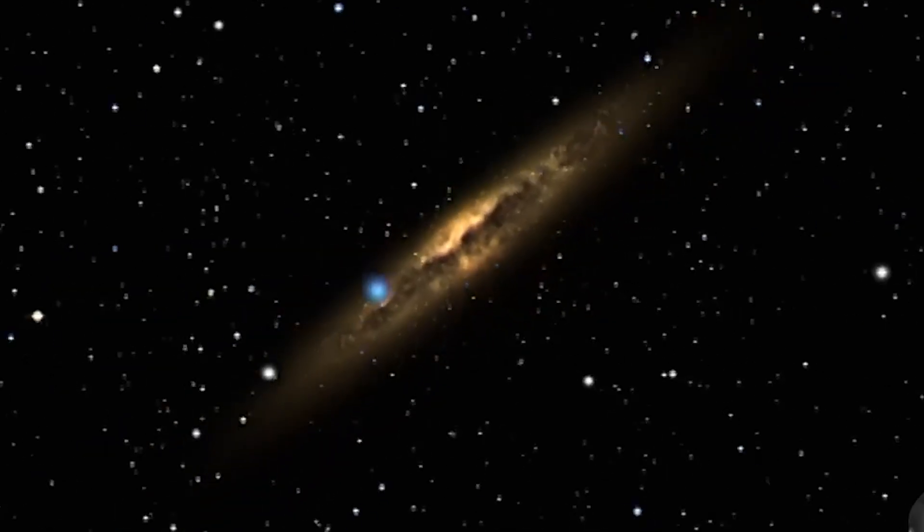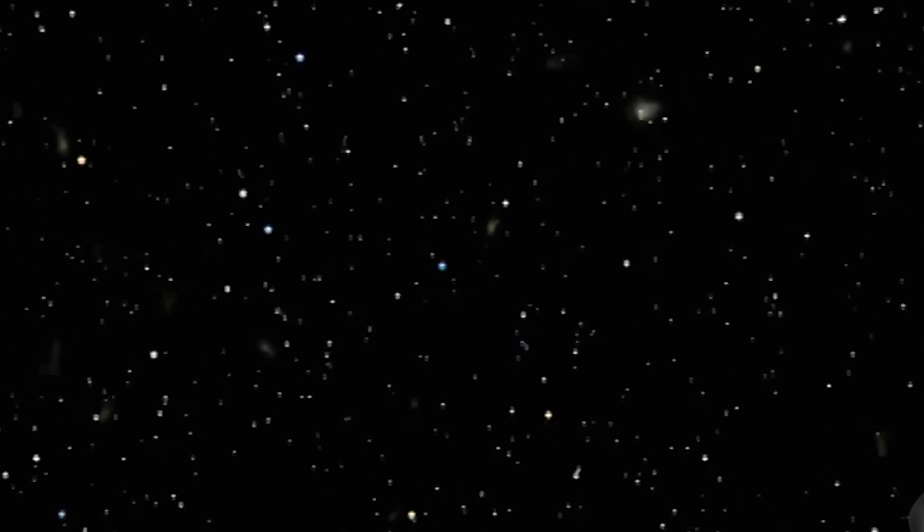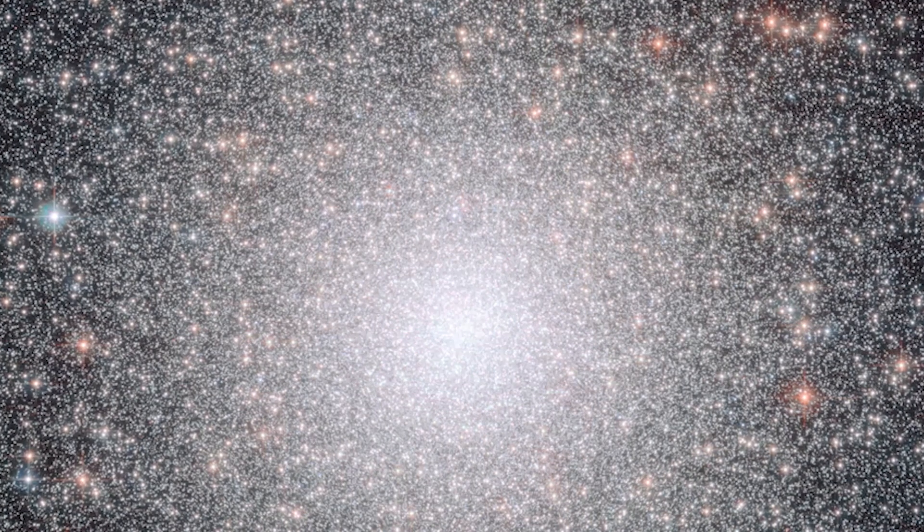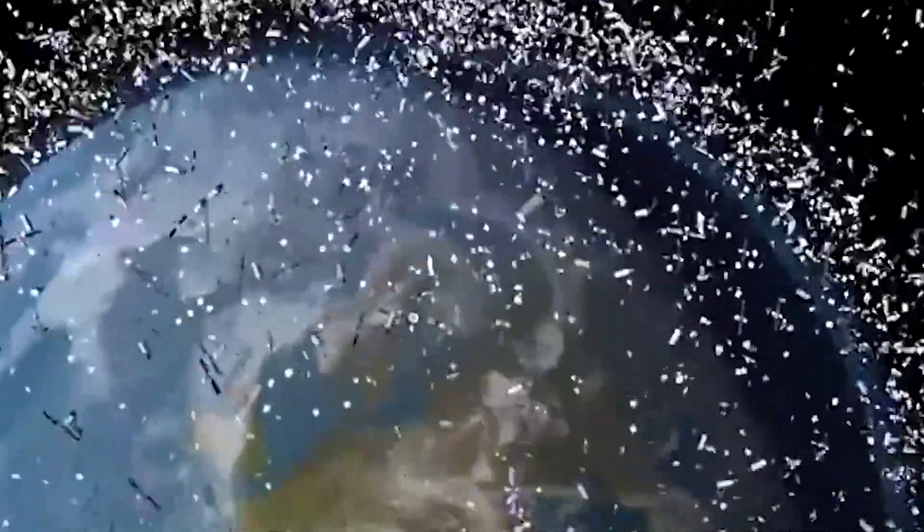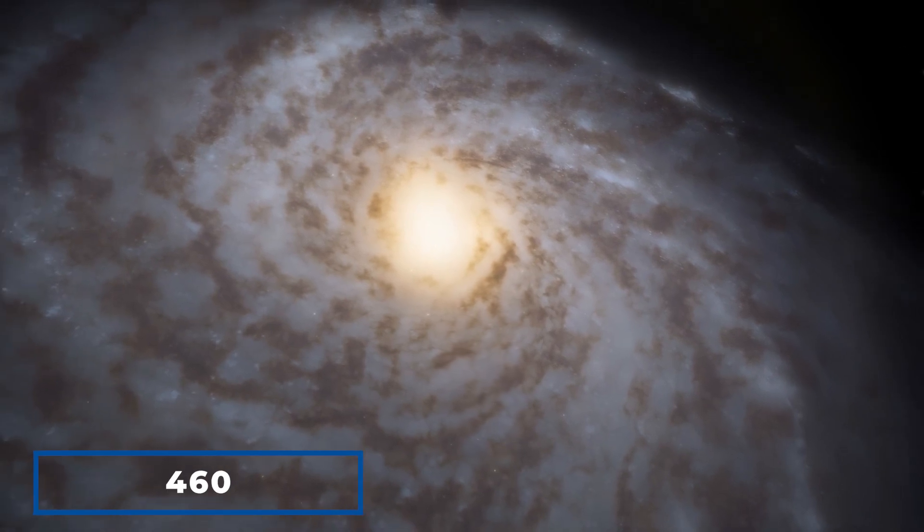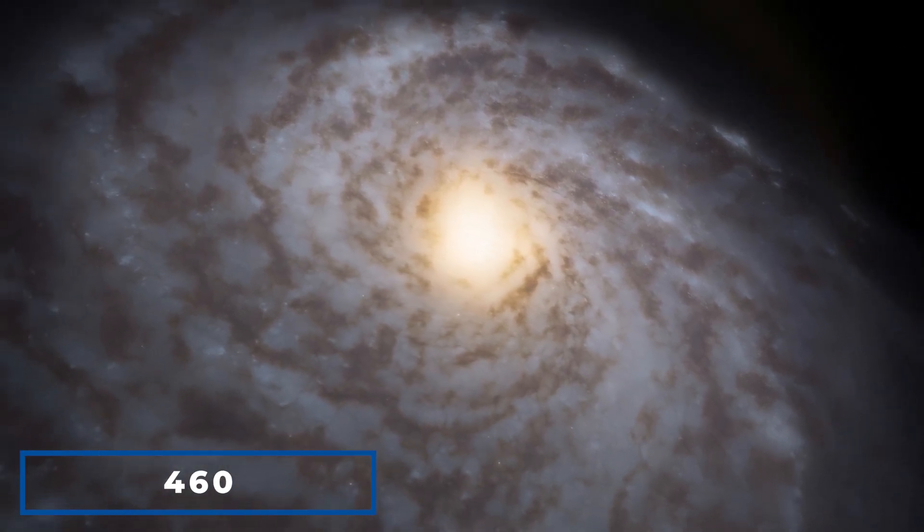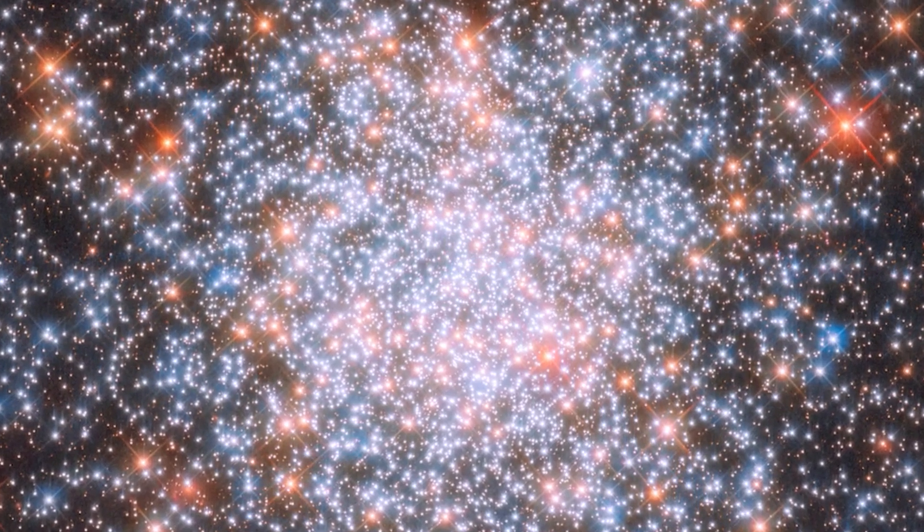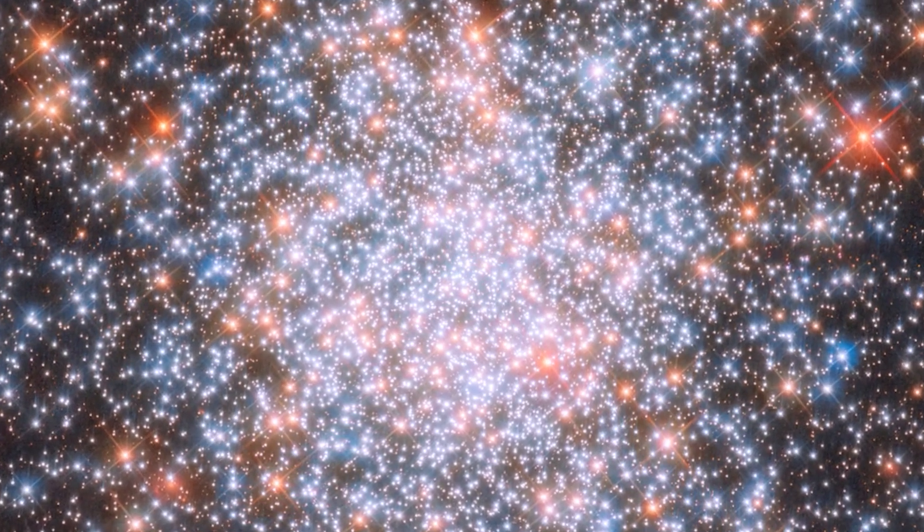The Andromeda galaxy boasts yet another fascinating attribute, an abundance of globular clusters. These clusters consist of tightly knit groups of stars that encircle the galaxy's center, much like satellites revolving around a planet. Andromeda is believed to house approximately 460 of these compact and ancient clusters, each encompassing hundreds of thousands to millions of stars that coalesced during the same era.